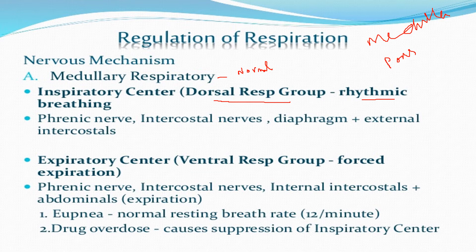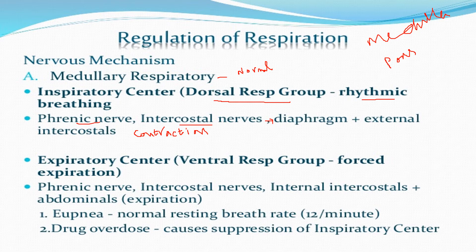During normal breathing, the phrenic nerve and intercostal nerves are stimulated to signal the diaphragm and external intercostal muscles to contract for two seconds. This increases lung volume, filling the lungs with air. Then the dorsal respiratory group becomes inactive for three seconds, causing relaxation of the diaphragm and external intercostal muscles, leading to elastic recoil of the lungs and normal expiration.